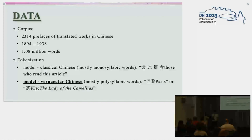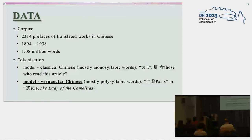As you may know, the first step in Chinese NLP is to segment the text into words. Our special problem here is that the texts are written in different languages — some are in classical Chinese, some are in vernacular Chinese, and some are even a mixture of both.